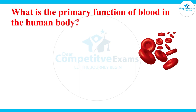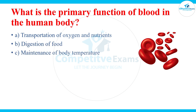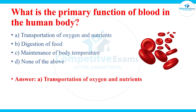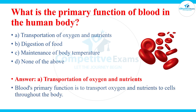What is the primary function of blood in the human body? Your options are: transportation of oxygen and nutrients, digestion of food, maintenance of body temperature, or none of the above. The answer is A: transportation of oxygen and nutrients. Blood's primary function is to transport oxygen and nutrients to cells throughout the body.